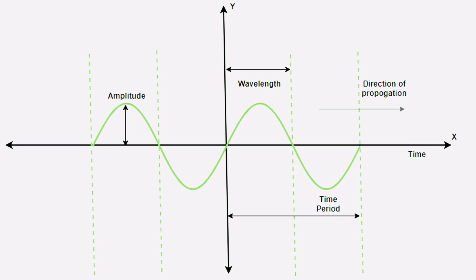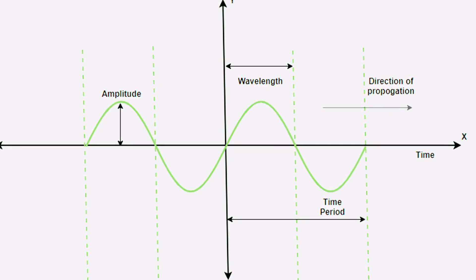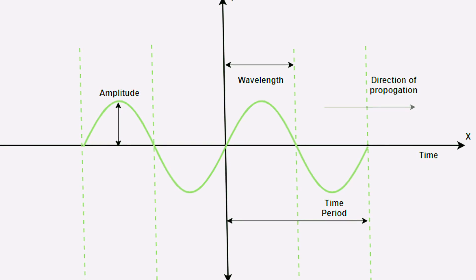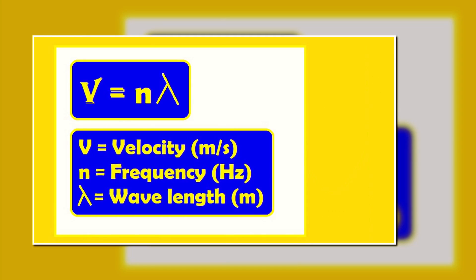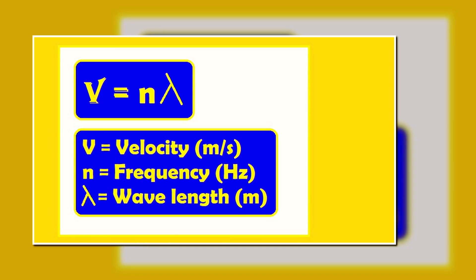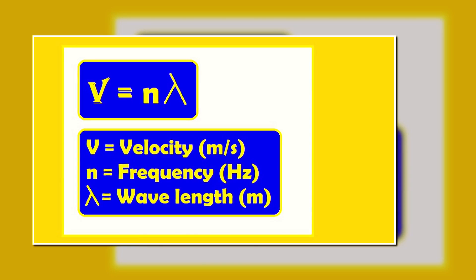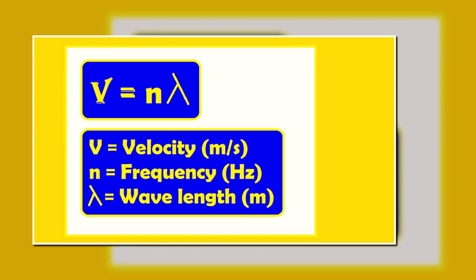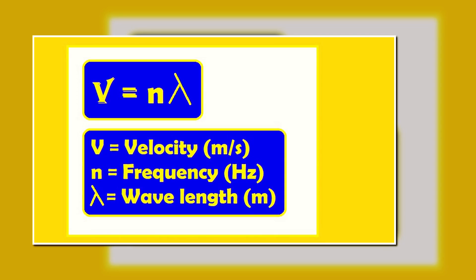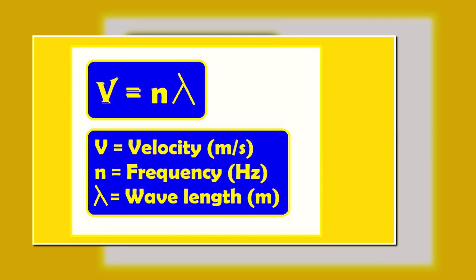All these three fundamental properties of sound can be defined mathematically in the form of a simple equation. V equals N lambda, where V is the velocity of the sound, N is the frequency, and lambda is the wavelength of the sound respectively. So, from the equation it is clear that the velocity of sound wave is directly proportional to its frequency and wavelength.